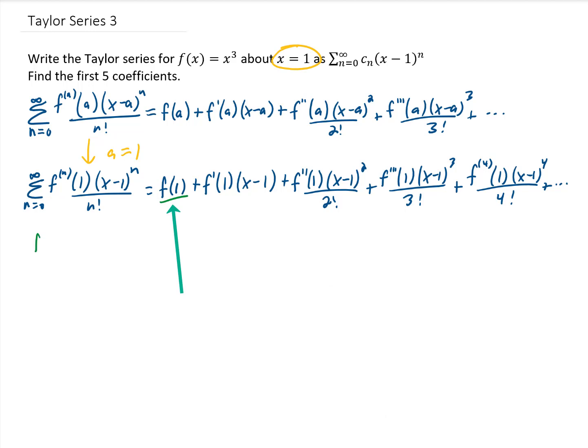Let's find this first term. f of 1 can be found just by plugging x equals 1 into this original function, and the value is 1. Our next term has an f prime of 1 on it. But to find f prime of 1, we first need to find f prime of x. That means take the derivative of x cubed, which is 3x squared. Okay, then f prime of 1 just means we're going to take that derivative we just took and plug in x equals 1. And we get 3 times 1 squared, which is 3.